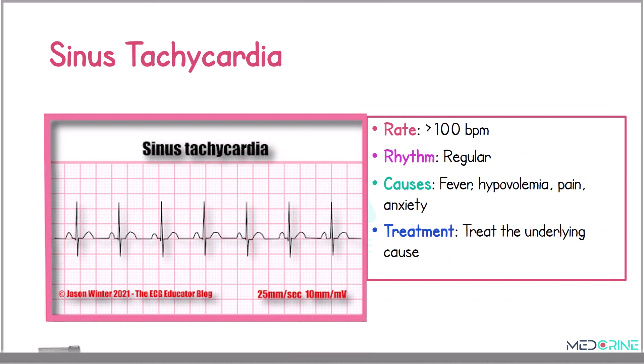The third rhythm is a sinus tachycardia. Sinus tachycardia features a heart rate that exceeds 100 beats per minute with a regular rhythm. Common causes include fever, hypovolemia, pain, and anxiety. Its management focuses on treating the underlying cause.